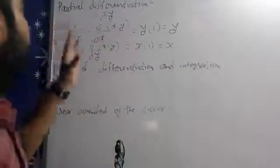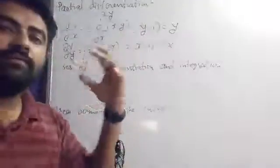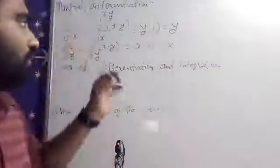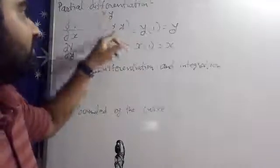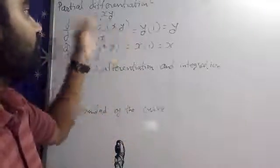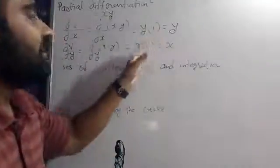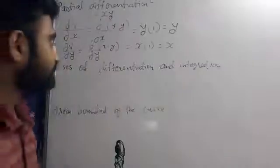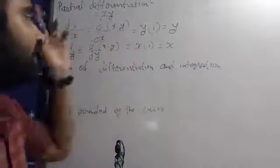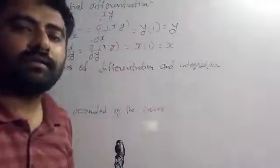So this is simple partial differentiation. In partial differentiation, whichever other term is there, it becomes constant for the other variable. For example, Y is the other term, so it becomes constant — take it outside, and differentiate what remains to get the answer. Here I have written only for two dimensions, but it can also be three dimensions.